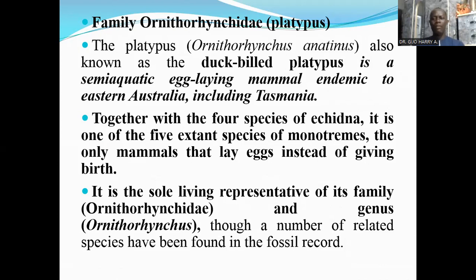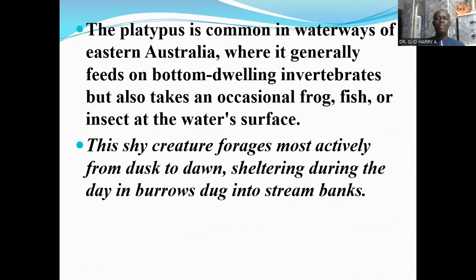Together with the four species of echidna, the platypus is one of the five extant species of monotremes — the only mammals that lay eggs instead of giving birth. It is the sole living representative of the family Ornithorhynchidae and the genus Ornithorhynchus, though a number of related species have been found in fossil records. The platypus is common in waterways of eastern Australia, where it generally feeds on bottom-dwelling invertebrates, but also takes an occasional frog, fish, or insect at the water's surface.